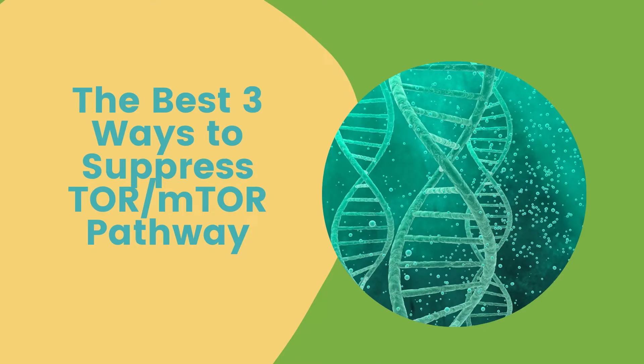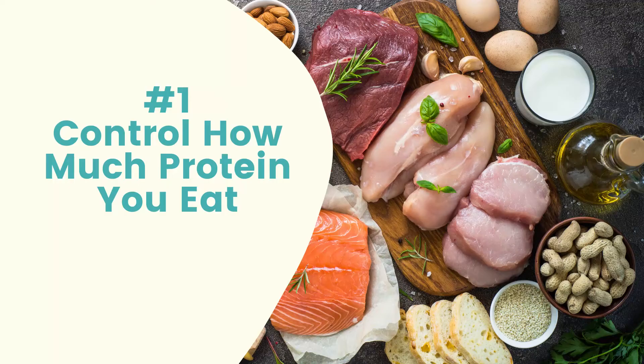Let me tell you three simple ways to reduce TOR. We want to suppress TOR — this is where we get the benefits and also the protection from all sorts of diseases. The first way to suppress TOR is to control how much protein you eat. On the one hand, we need protein to live — to repair tissues, grow hair, grow nails, repair bones, and recover from exercise.